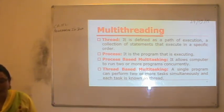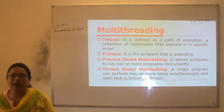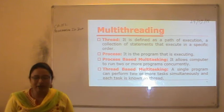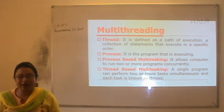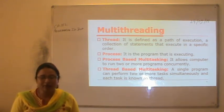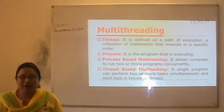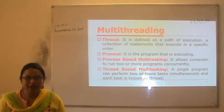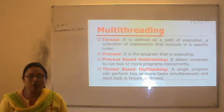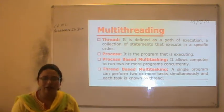There are two types of multitasking. One is process-based multitasking, and another is thread-based multitasking. In process-based multitasking, it allows the computer to run two or more programs concurrently. Whereas in thread-based multitasking, a single program can perform two or more tasks simultaneously, and each task is known as a thread.